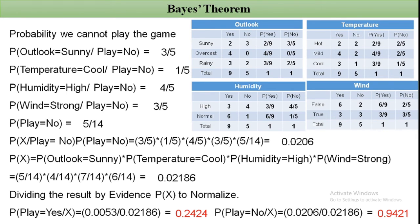Comparing these two probabilities, the probability that the condition is suitable to play a game (0.242) is less than the probability that it is not suitable (0.9421). Therefore, by applying Bayes' theorem, we conclude that this weather condition is not suitable to play a game.